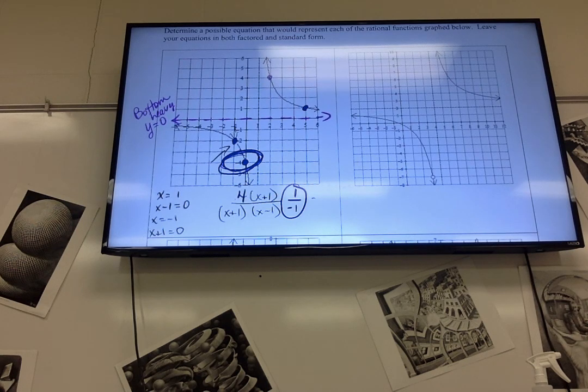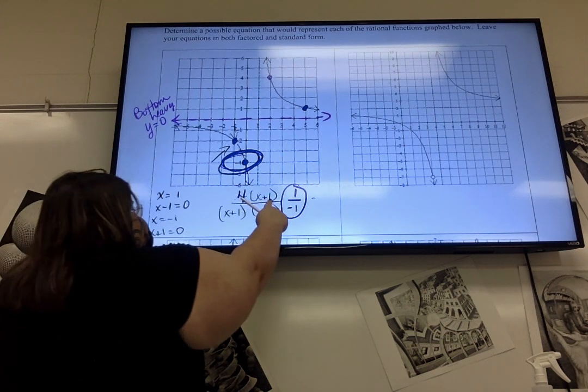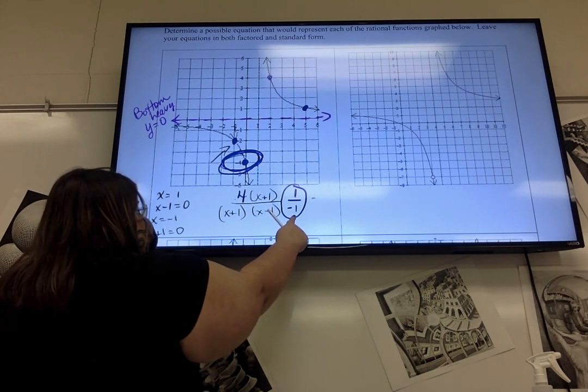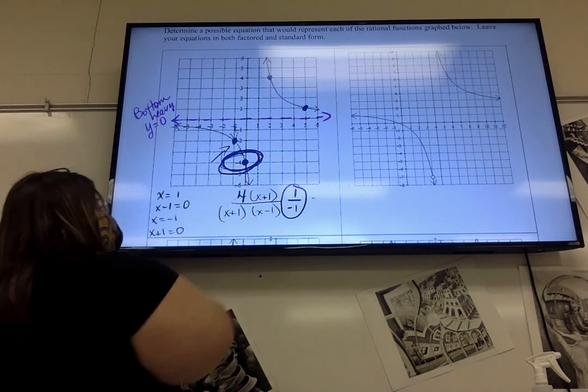But yeah, if I had a 4 right there, then my constant on top would be 4, and my constant on the bottom would be negative 1, which would give me negative 4.